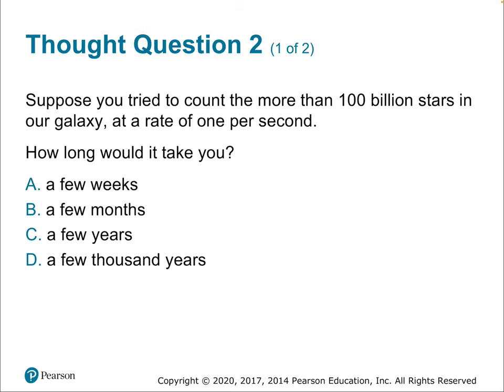Suppose you tried to count all 100 billion stars in our galaxy at a rate of one per second — one star, two star, three star. How long would it take? It would take thousands of years. Because 100 billion seconds is over a thousand years, and there are simply not that many seconds in a year.